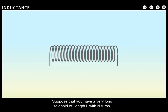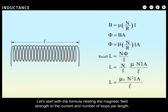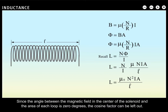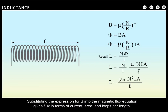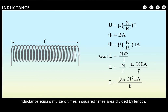Suppose that you have a very long solenoid of length L with N turns. Let's find its inductance. Starting with the formula relating magnetic field strength to current and number of loops per length, the magnetic flux through each turn equals the magnetic field strength times the cross-sectional area times cosine theta. Since the angle between the magnetic field in the center of the solenoid and the area of each loop is zero degrees, the cosine factor can be left out, so flux equals B times area. Substituting the expression for B into the flux equation gives flux in terms of current, area, and loops per length. Putting this into the inductance formula gives the final expression: inductance equals mu-zero times N squared times area divided by length.